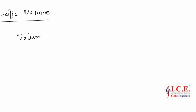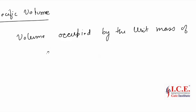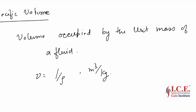Another property is specific volume. It is defined as the volume occupied by the unit mass of fluid, so it is nothing but one divided by rho. The unit is meter cube per kg. Note that anything which has the specific term attached to it suggests that the quantity is divided by the mass.